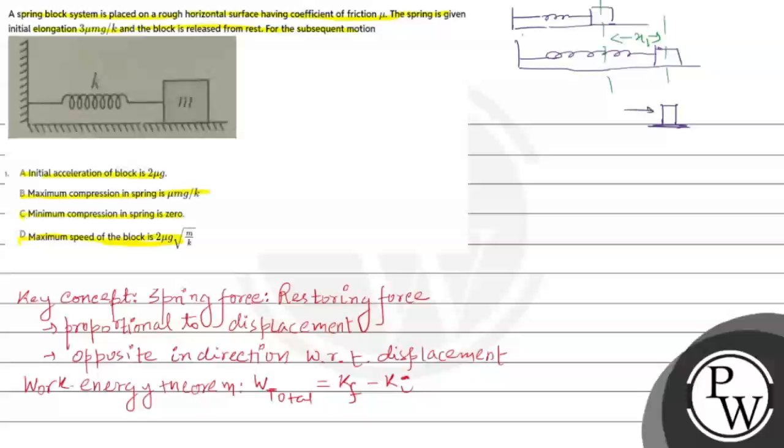After elongation, if we consider the block: in this direction spring force acts, in this direction frictional force acts, and in this direction net force ma acts. So from here you can say that kx1 minus f, that is the frictional force, equals to ma.